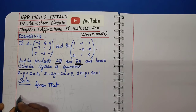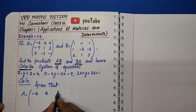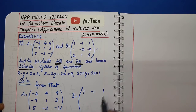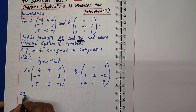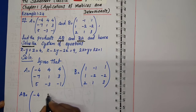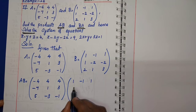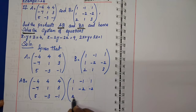Given matrix A is minus 4, 4, 4, minus 7, 1, 3, 5, minus 3, minus 1 and matrix B is 1, minus 1, 1, 1, minus 2, minus 2, 2, 1, 3. First, we calculate the AB product. AB equals A times B: matrix A is minus 4, 4, 4, minus 7, 1, 3, 5, minus 3, minus 1 multiplied by matrix B: 1, minus 1, 1, 1, minus 2, minus 2, 2, 1, 3.